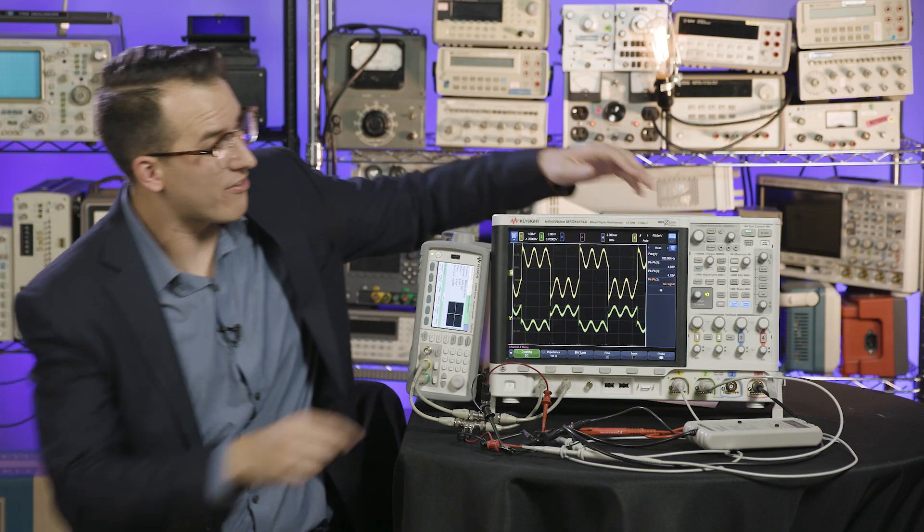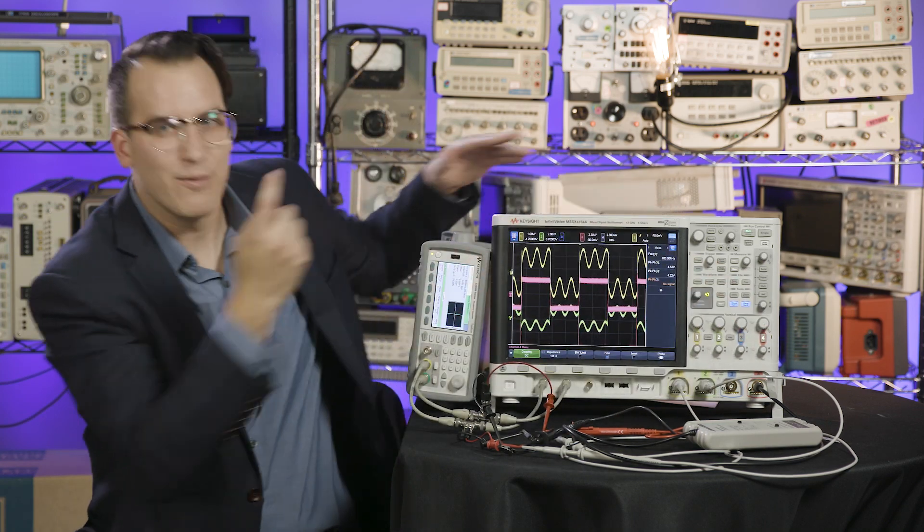If I'm a receiver, this is going to cause some serious problems. We'll get ones where we should have zeros and zeros where we should have ones. The horror. However, if we use a differential probe to probe the same signal, we get this. As you can see, the sine wave is completely filtered out.